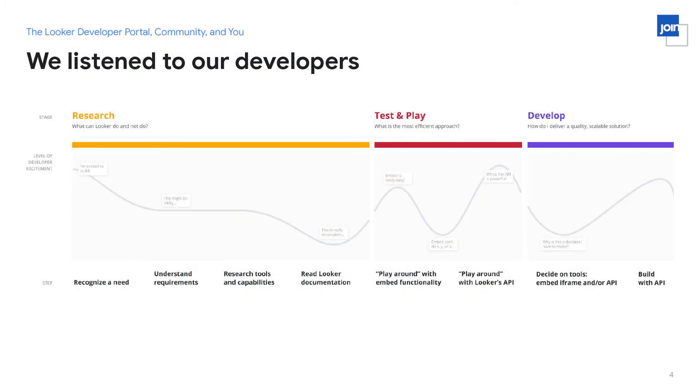Very frequently, we talk to our developers to make sure that we are serving their needs. We do a lot of extensive research to make sure that we're taking the right steps to serve our developer needs and have full knowledge on any existing pain points that our users or developers might have. The image you see above was from research we ran slightly over a year ago. And one of the things we discovered, as you can see from this illustration, is that there was some friction for developers in researching Looker's tools and capabilities and understanding what functionality was the right one to use for each of their development needs.